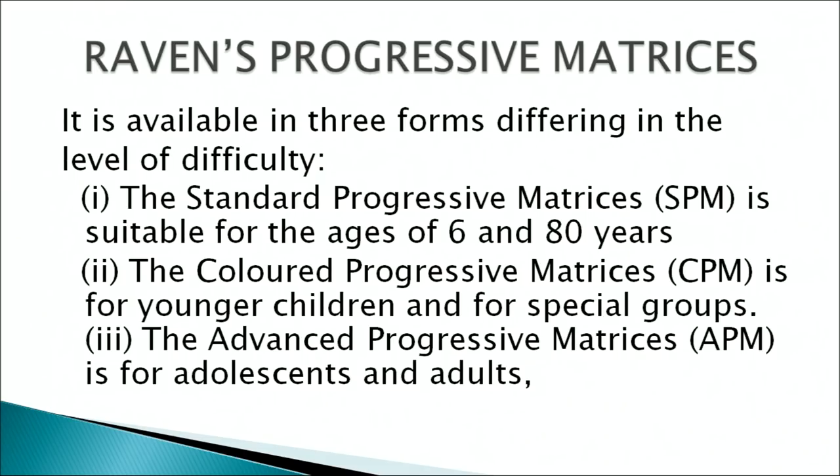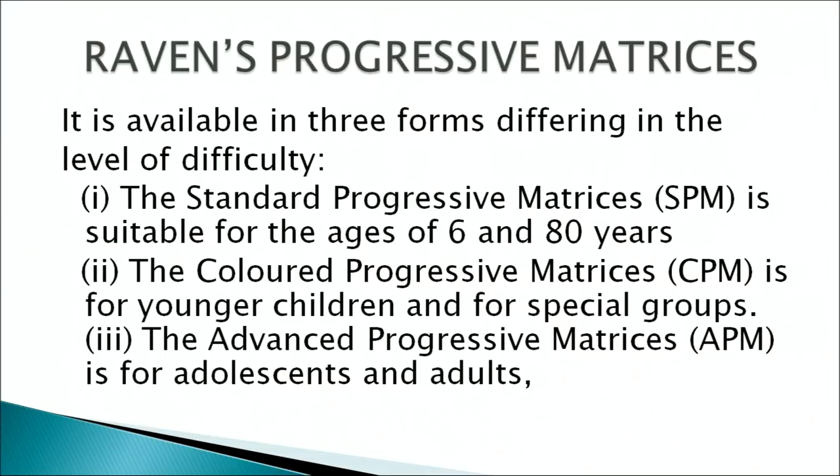Another intelligence test is Raven's Progressive Matrices, available in three forms differing in level of difficulty. The Standard Progressive Matrices (SPM) is suitable for ages 6 to 80 years. The Colored Progressive Matrices (CPM) is used for younger children and special groups. The Advanced Progressive Matrices (APM) is used with adults and adolescents.